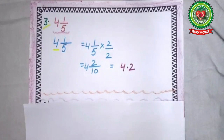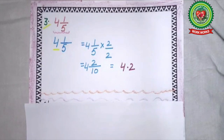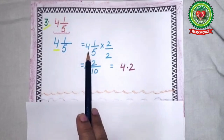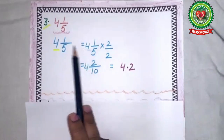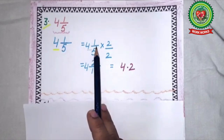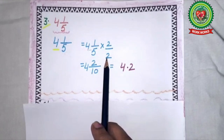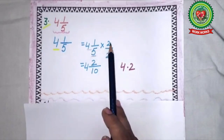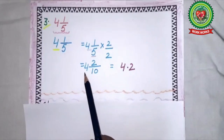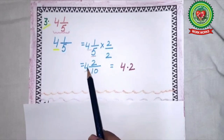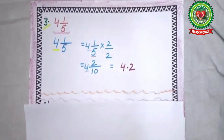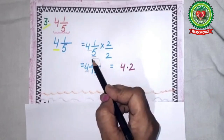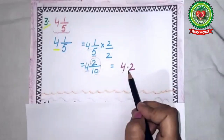The given statement is in mixed fraction, but we will not convert it into improper. We write it as 4 whole number 1/5. The whole number remains the same: 4. Next, 1/5 × 2/2, since the denominator is 5 we multiply by 2. 1 × 2 = 2, 5 × 2 = 10. It becomes 4 whole number 2 upon 10. One zero, shift the point by 1 digit. Answer is 4.2.